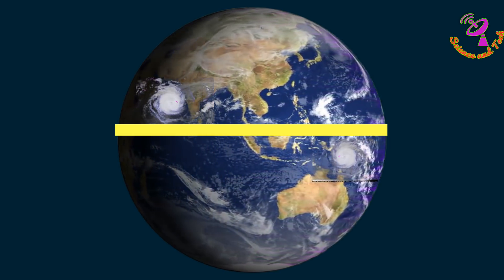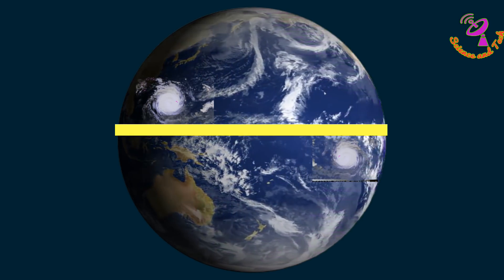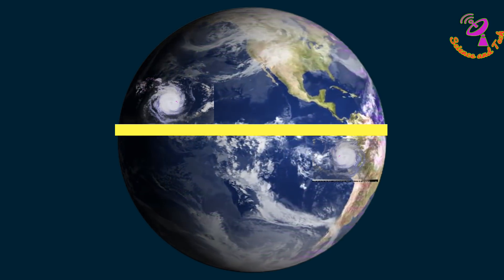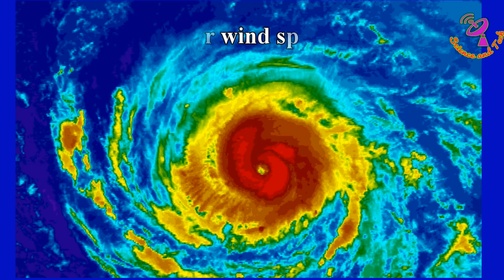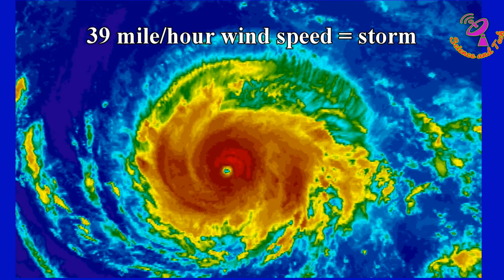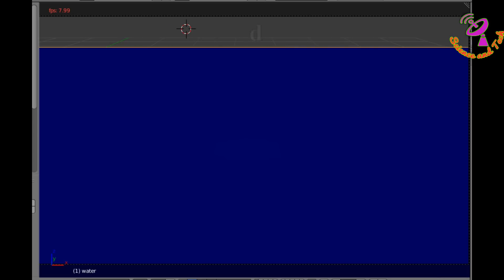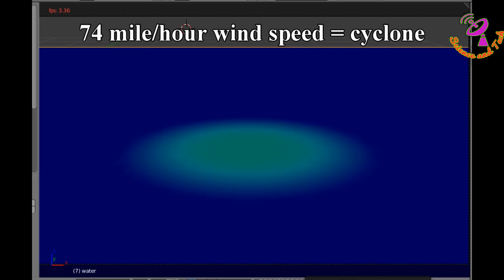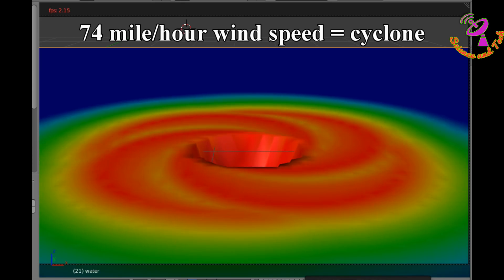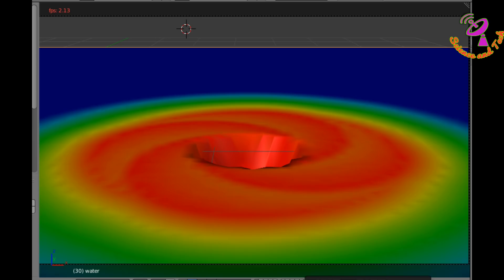A storm will swirl in a clockwise direction at the south pole, and in an anti-clockwise direction at the north pole. The swirling direction of the storm will change depending on earth's rotation. When the storm's speed is 39 mph, it is called a tropical storm. When the storm obtains a speed of 74 mph, it is officially announced as a tropical cyclone.